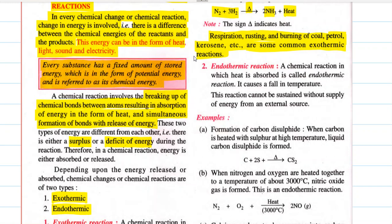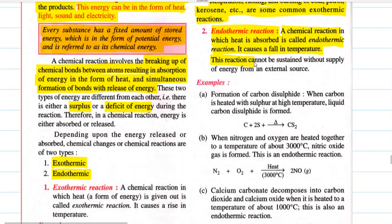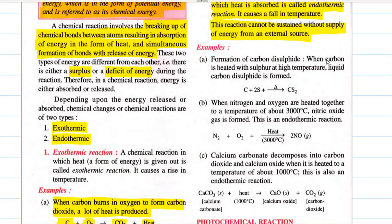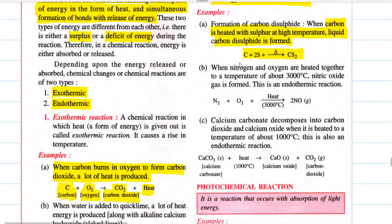Endothermic reaction: a chemical reaction in which heat is absorbed is called an endothermic reaction. It causes a fall in temperature and cannot be sustained without supply of external heat or energy. Formation of carbon disulfide — when carbon is heated with sulfur at high temperature, a liquid carbon disulfide is formed. It cannot form without heat, so it is endothermic. The difference: in an endothermic reaction, heat is not produced at the end; in exothermic, even if you apply heat initially, you get excess energy in the form of heat at the end.